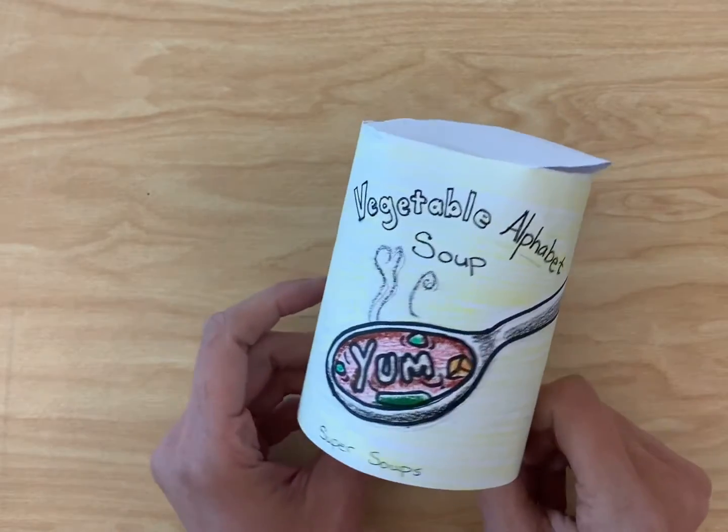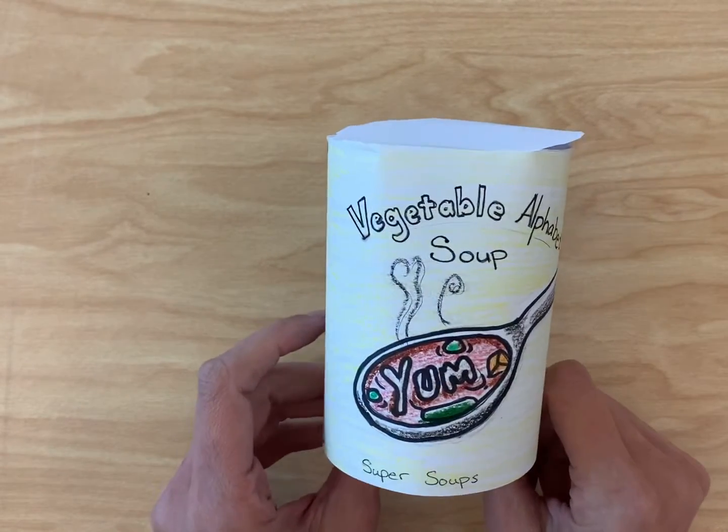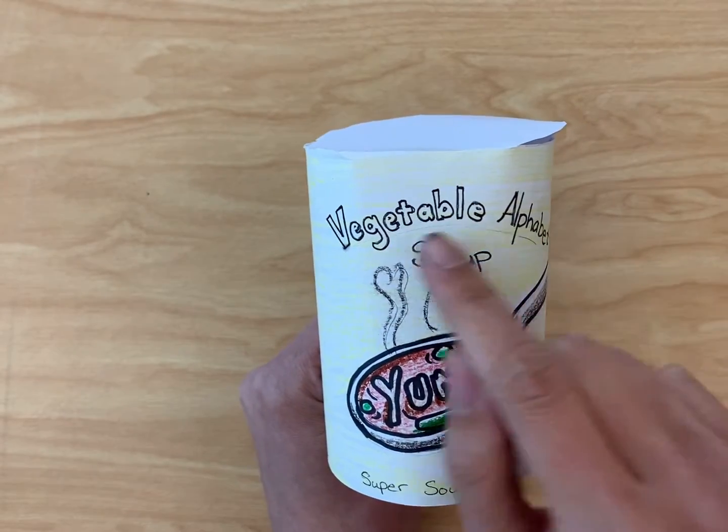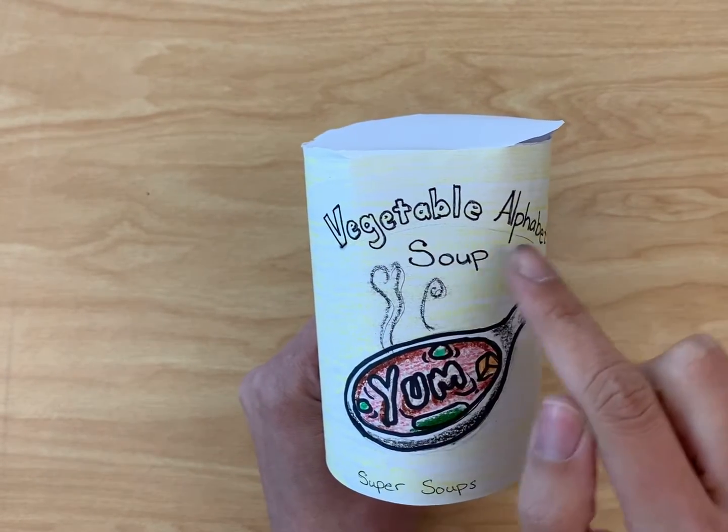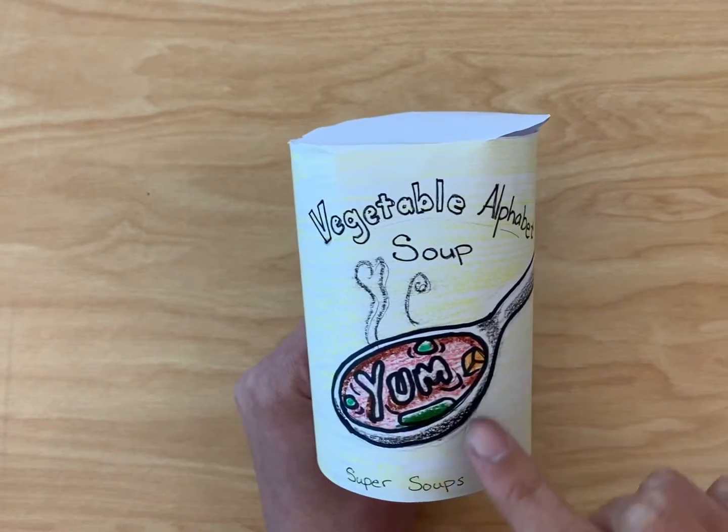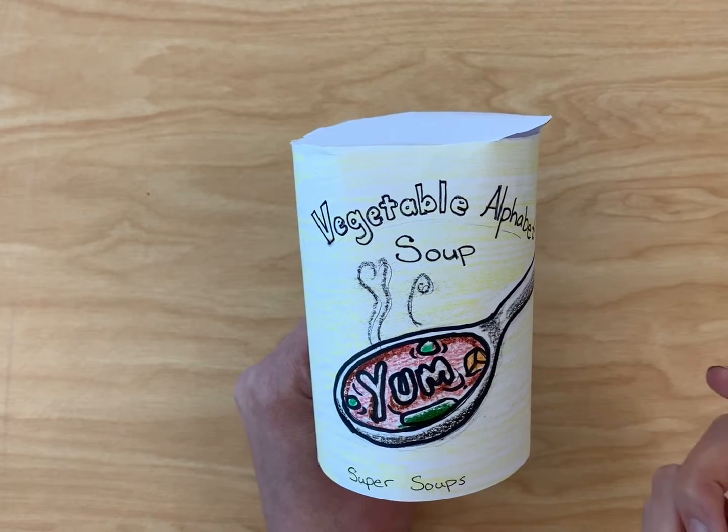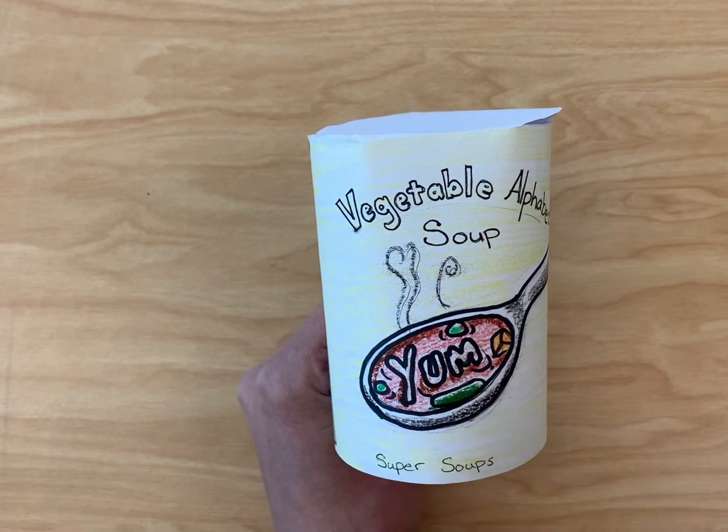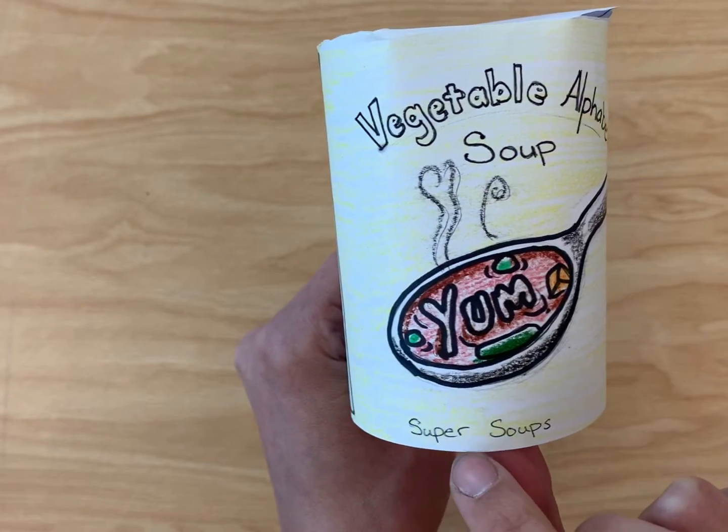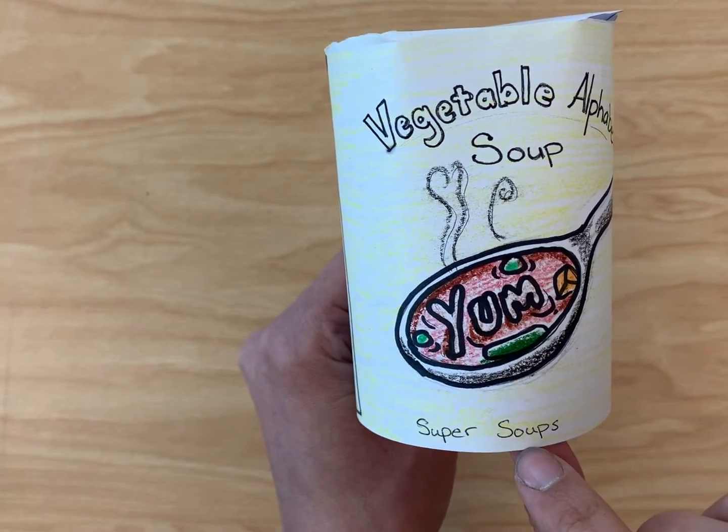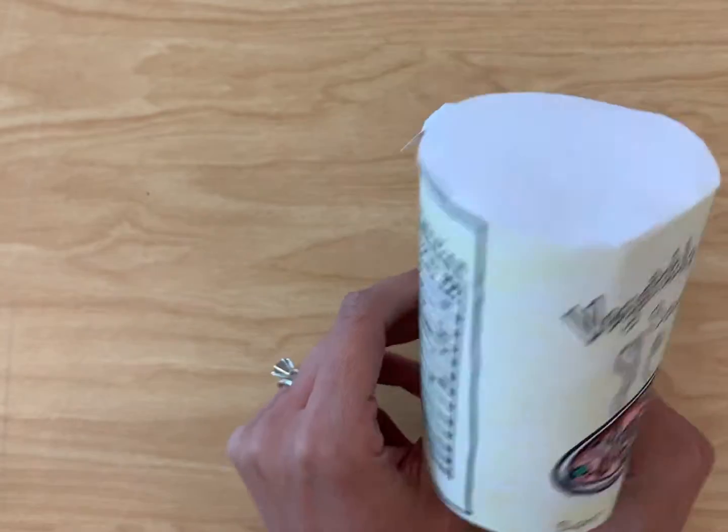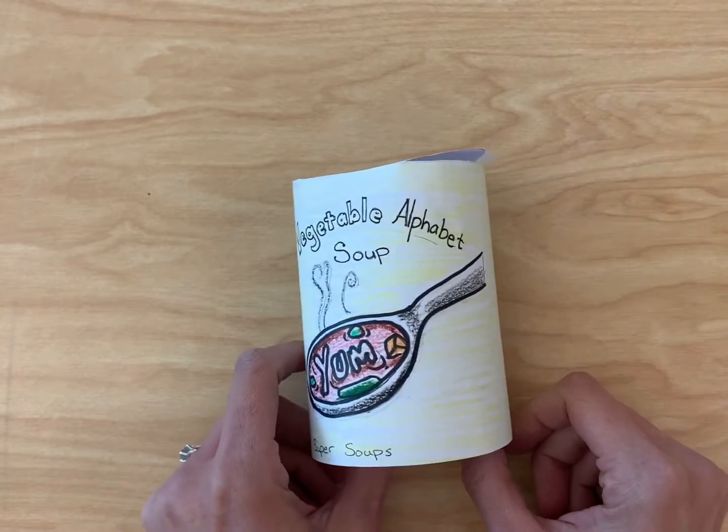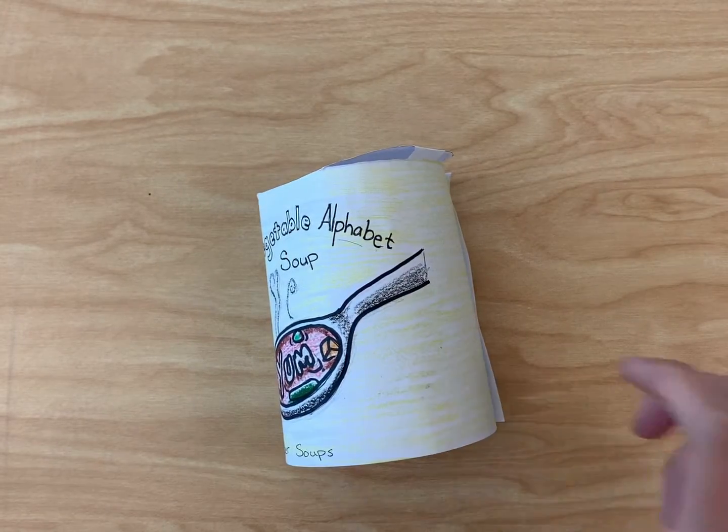Today we're going to see how to make a can of soup. This is the one that I designed. You can see that I have the soup type written up here at the top, so you know it's a vegetable alphabet soup. I drew a picture to sort of draw people in so they would want to eat my soup. I even spelled the word yum right here in the spoon, and I also thought of a product name. My product name is called Super Soups. Then I decorated the can and I put it all together here, make it a little bit more three-dimensional. So let me show you how we can do that.